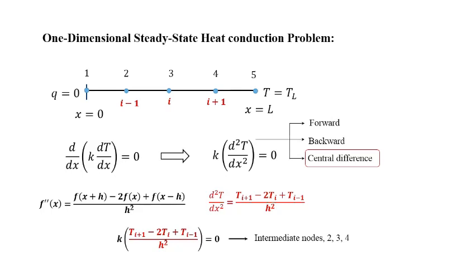The final expression is: k · [T(i+1) − 2·T(i) + T(i−1)] / h² = 0, valid only for intermediate nodes 2, 3, and 4. This formulation requires at least three nodes; for boundary node 1, there is no node to its left, and for boundary node 5, no node is available to its right. Hence the formulation only applies to intermediate nodes.